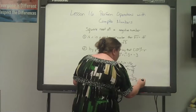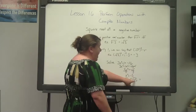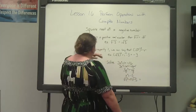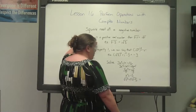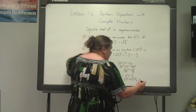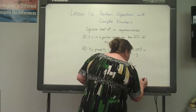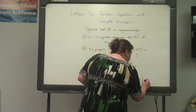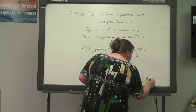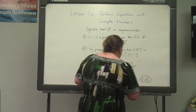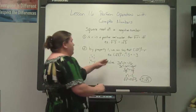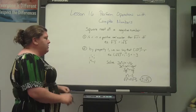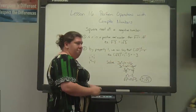Now I see a negative under the radical. Using our properties, we can say x equals plus or minus i times the square root of five. And that is your answer to three x squared minus one equals negative sixteen.